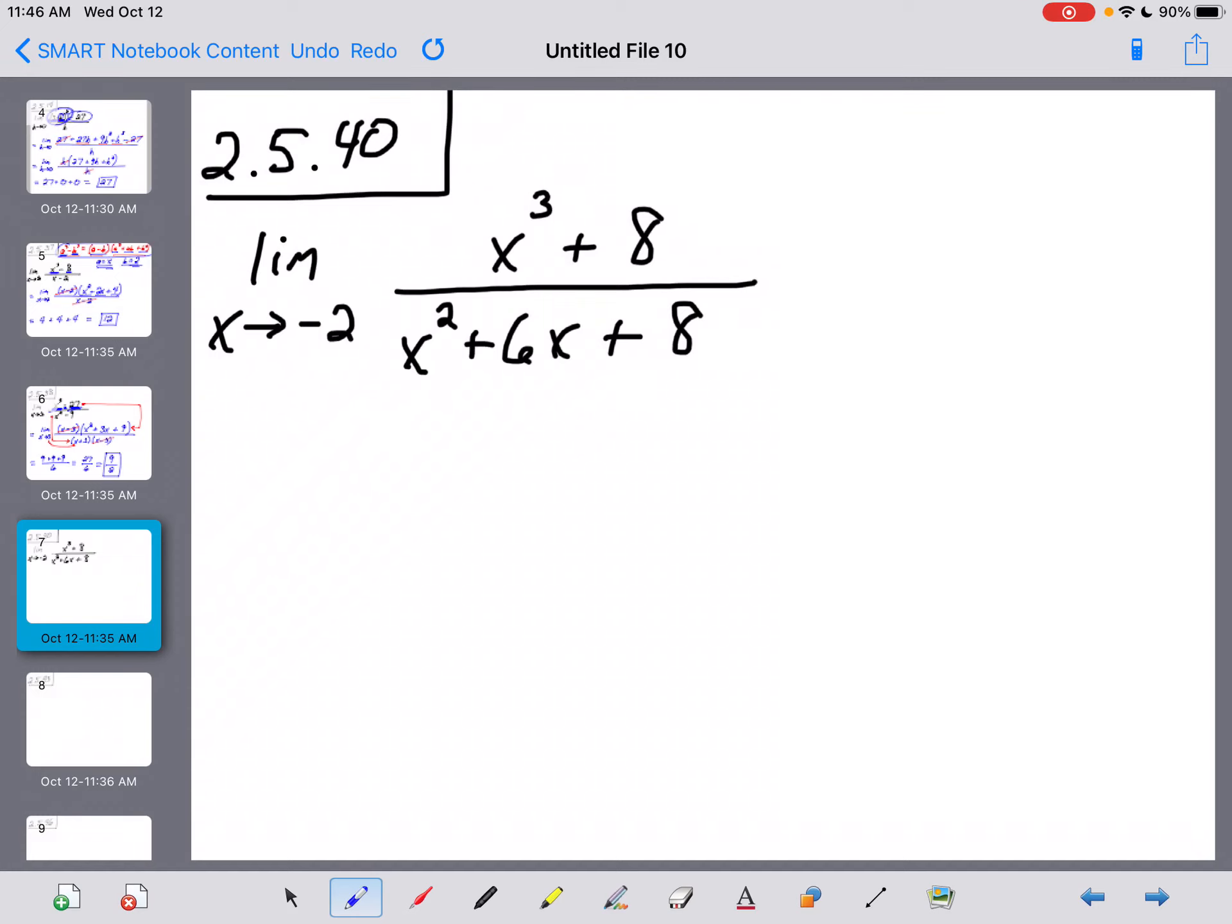Number 40 here is a little spin on what we did on the previous problem. In 37 and 38, we had to know how to factor a difference of cubes in order to pull this off. Now, in number 40, they give you something different up here in the numerator. That would be a sum of cubes.